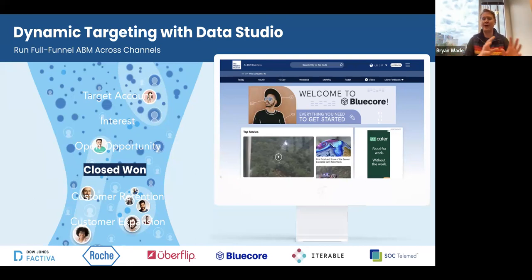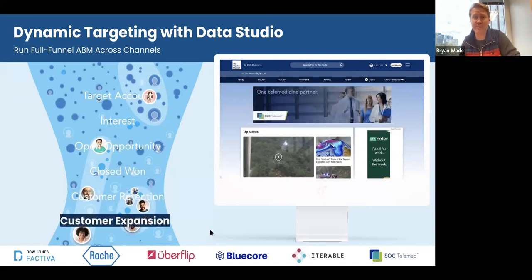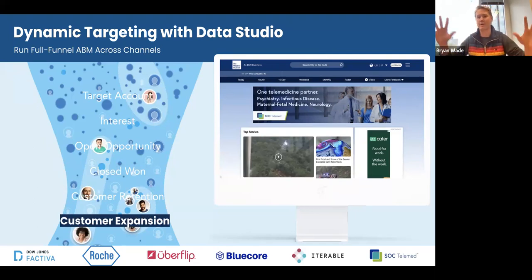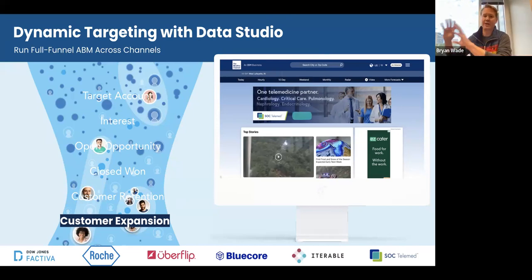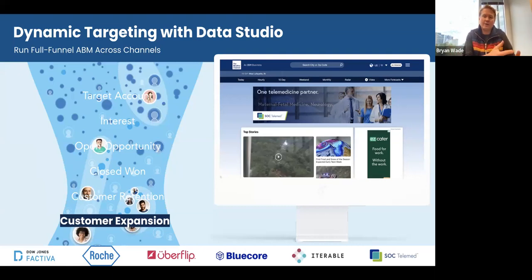Customers like Uberflip are targeting open opportunities with banners. We also have cool examples of clients like Bluecore, a software company out of New York, targeting their account lists for brand new customers. ABM is about acquiring new customers and building pipeline, but it's also about creating great experiences. Clients are using our platform for customer retention campaigns and customer expansion campaigns like Sock Telemed — a multi-product business selling infectious disease, neurology, psychology, cardiology, and other medical areas with telemedicine solutions. They land one group and then expand into many others.